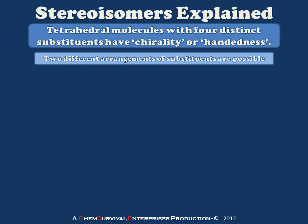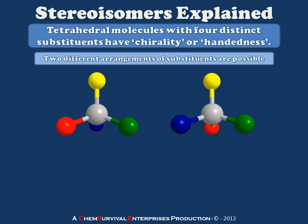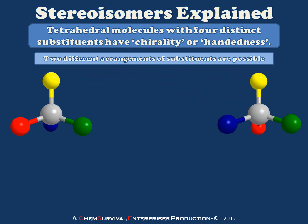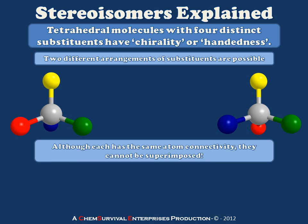This is because there are two different arrangements of substituents which are possible around a tetrahedral center. Taking our examples here with our fictitious molecule containing a yellow, green, blue, and red substituent around a gray central atom, you can see that I have two different arrangements here which are distinct — they cannot be superimposed with one another even though they have all the same bond connectivity.